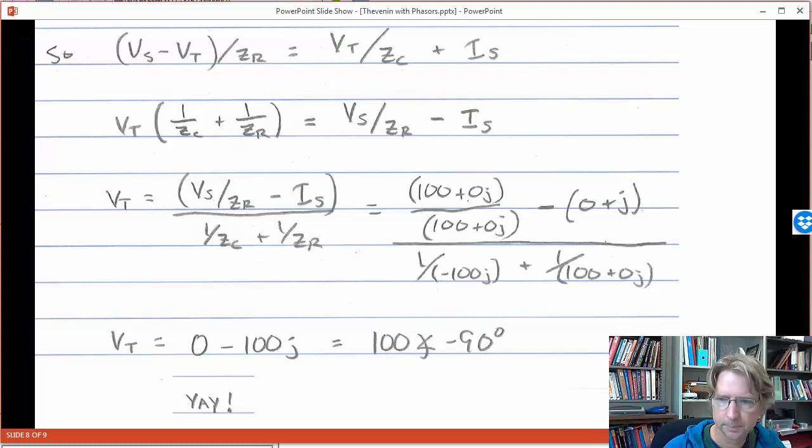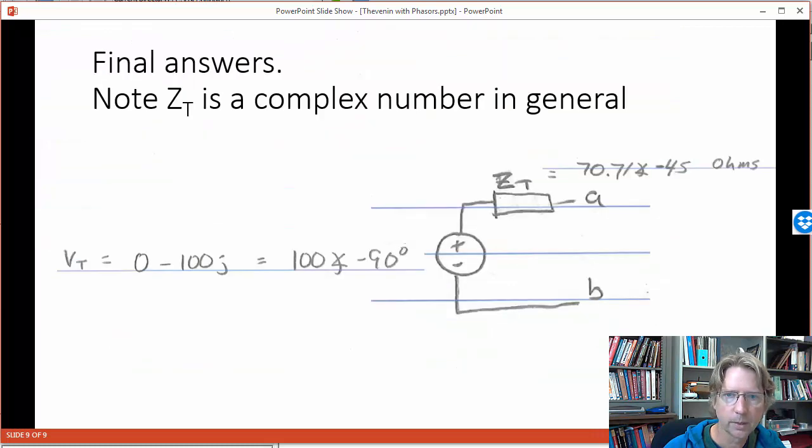And we're done. So to finish it off, we need to copy the answers to the diagram. So VT, we started with phasors, so we're ending with phasors, we're not going to the cosine form. So VT 100 with a phase of minus 90, ZT 70.71 with a phase of minus 45. And that's all you have to do.